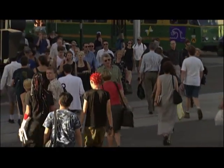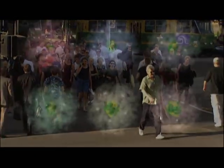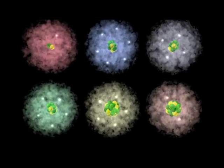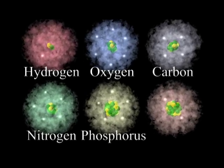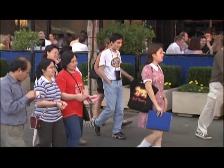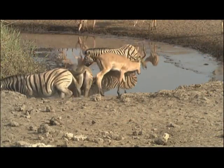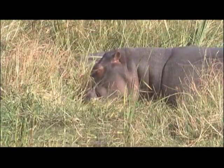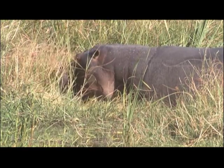All of us are made up of trillions upon trillions of atoms. Of the 92 naturally occurring elements, six — hydrogen, oxygen, carbon, nitrogen, phosphorus, and calcium — account for more than 98 percent of our mass. The same is true throughout the web of life, from large predators such as lions to huge herbivores like hippopotamuses and the grasses that give them energy.